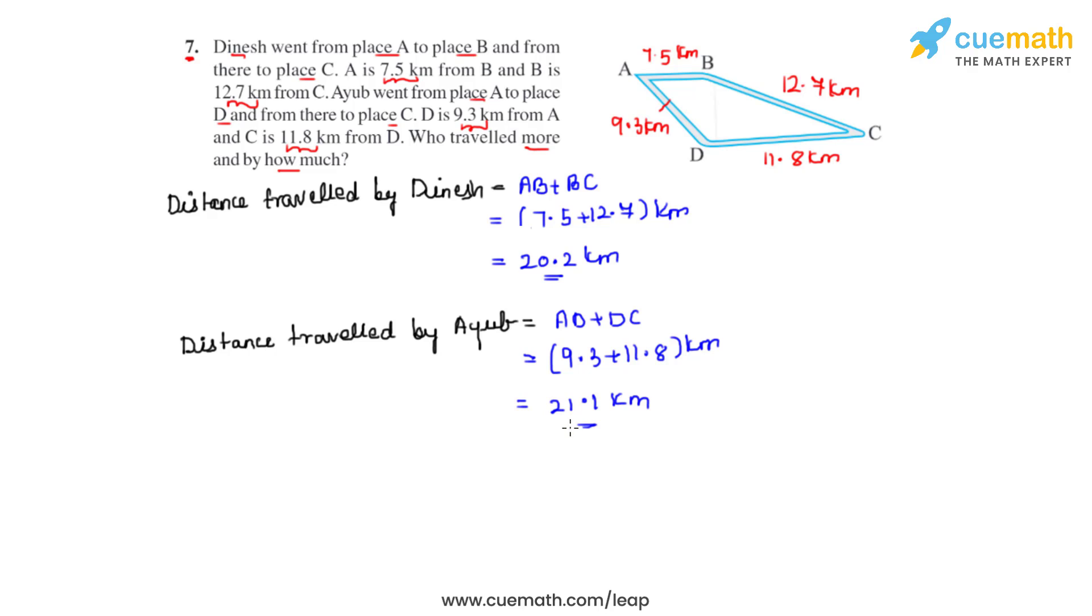Now we can clearly see that Ayoub traveled more than Dinesh. Now to find how much more did he travel than Dinesh we'll be finding the difference between the distances traveled by both of them. So the difference that we have will be 21.1 minus 20.2.